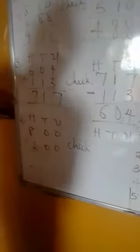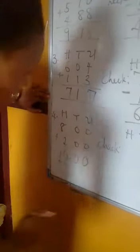0 plus 0 is 0, 0 plus 0 is 0, 8 plus 2 is 10. So I have 1000. Now, this answer is 1000, so I will check using 1000.